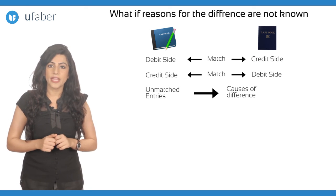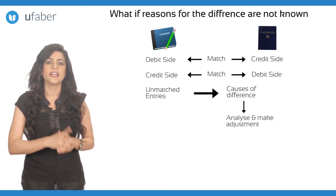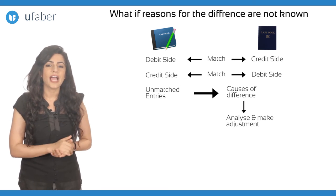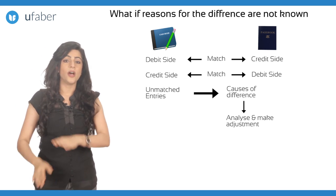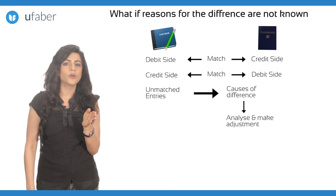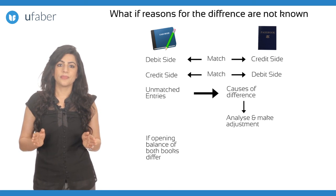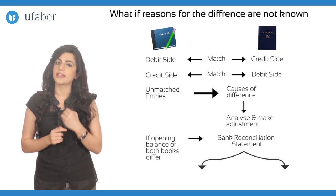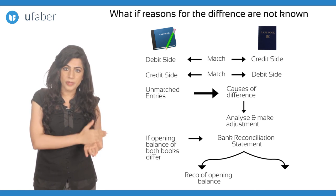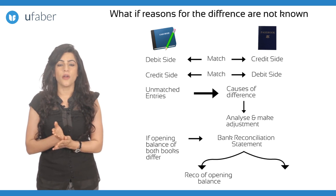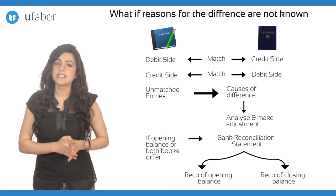Once these causes are located, their effects on both the books are analysed and then the reconciliation statement is prepared to arrive at the actual bank balance. In this procedure, we must first check whether the opening balance of both the books are the same or not. If the opening balances are not the same, then the reconciliation is divided into two categories: one relating to the reconciliation of the opening balance and the other relating to the reconciliation of the closing balance. The process of reconciliation, however, remains the same.